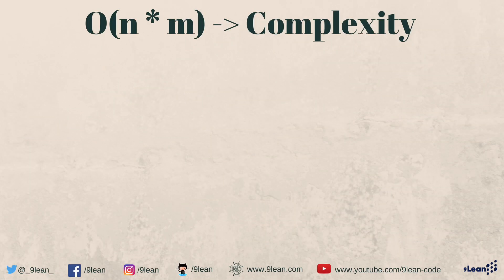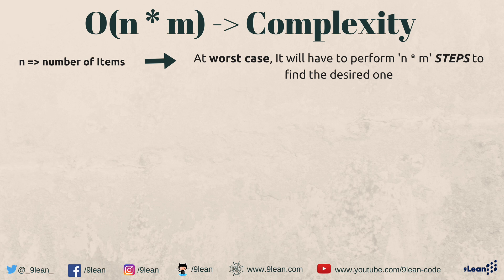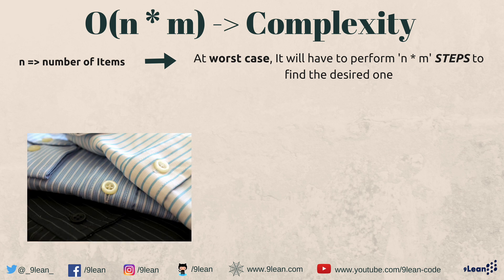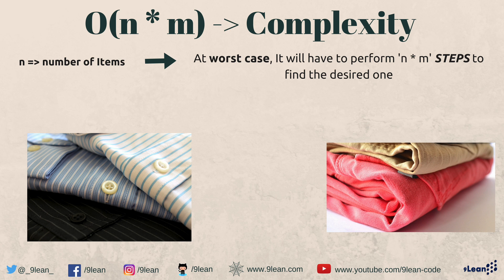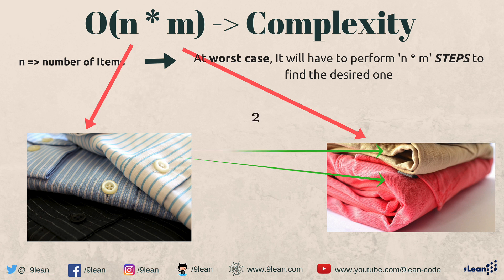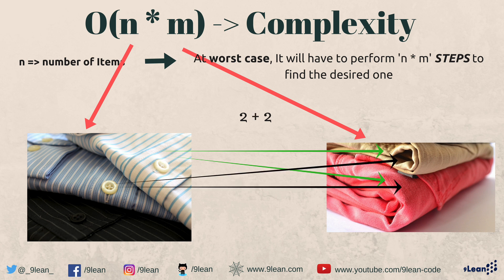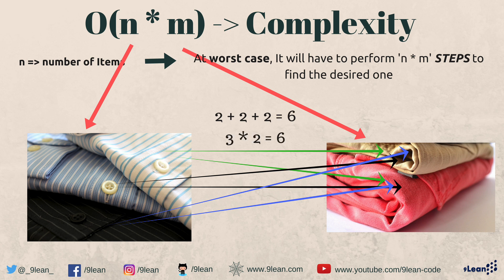Now let's talk about O(N×M) complexity. Here N is the number of items, meaning at worst case it will have to perform N×M steps to find the desired one. Using our shirts example but with only two matching pants: N represents the number of shirts and M represents the number of pants. Comparing each of the three shirts with both pants gives six comparisons — 3×2, which is N×M. That's what O(N×M) complexity means.